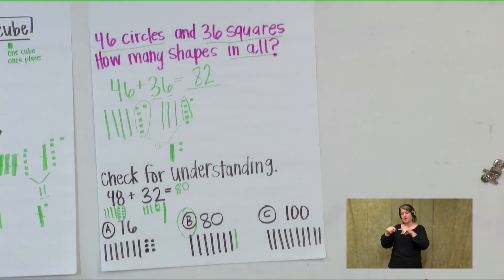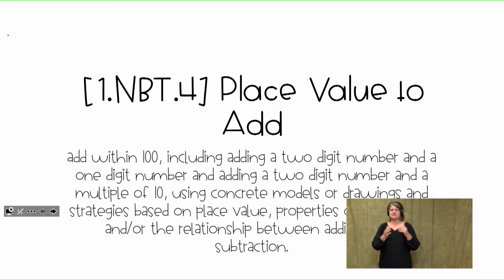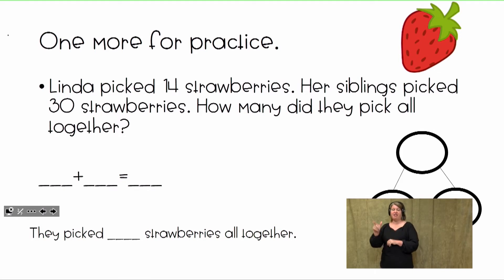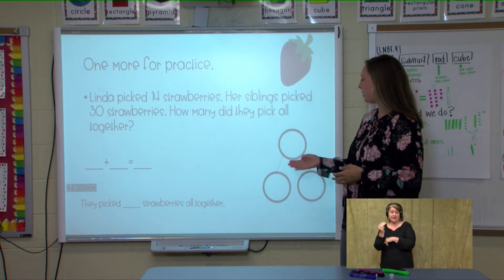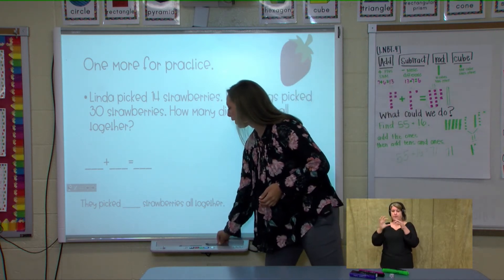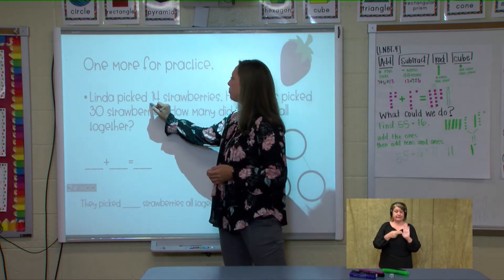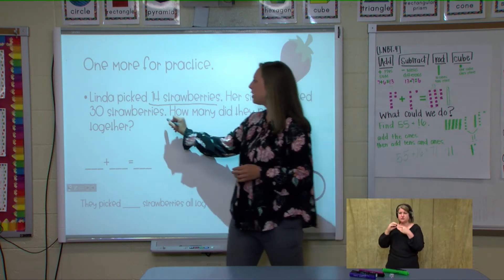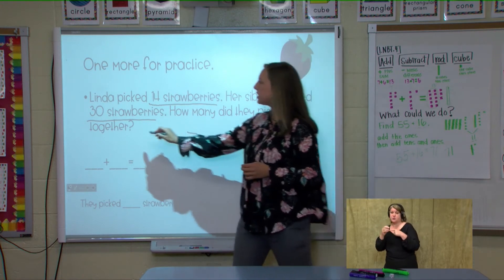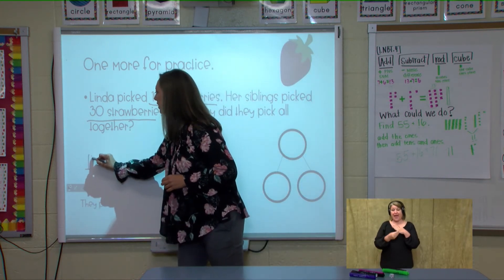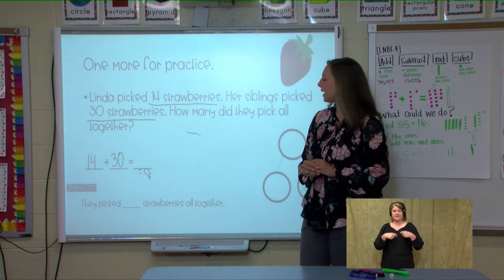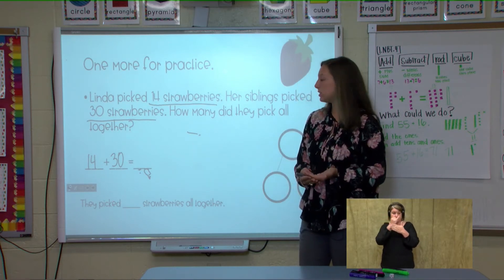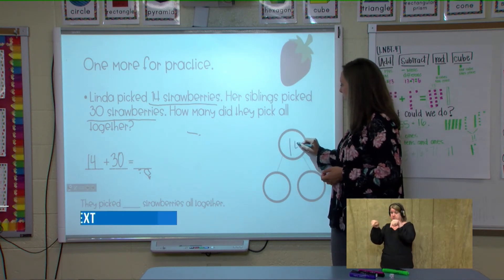Now we're going to go to our smart board and do a couple of examples to add our place values. Linda picked 14 strawberries. Her siblings picked 30 strawberries. How many did they pick all together? We did this problem on Monday, but I want to make sure you remember how to use the number bond method. It's a word problem, so we're going to mark it up.